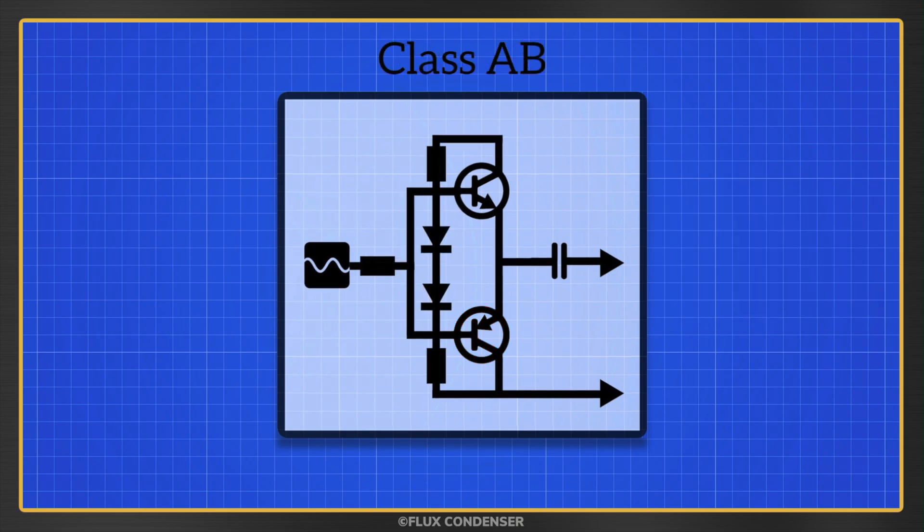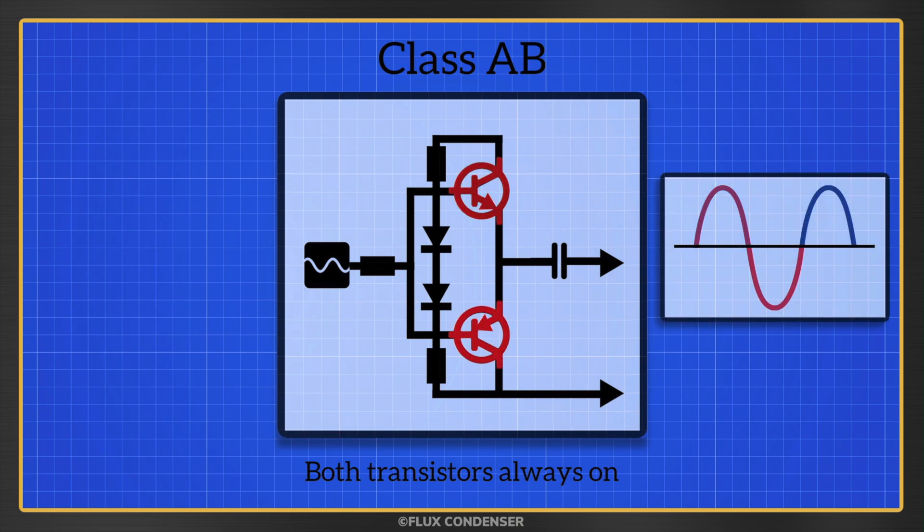Class AB amplifiers fix this problem by making sure both output transistors are always turned on. Just a little. And all it takes is the addition of these two diodes to transform a class B amp into a class AB amp. The diodes allow a small amount of current to trickle to each transistor. This keeps the voltage above 0.6 volts if there's an input signal. Such biasing eliminates the crossover distortion gap, ensuring a smooth transition between the positive and negative of the signal.